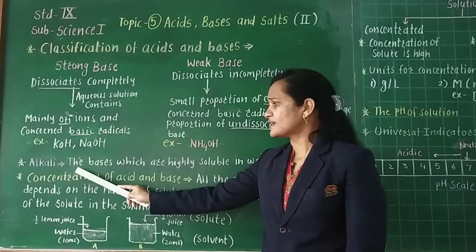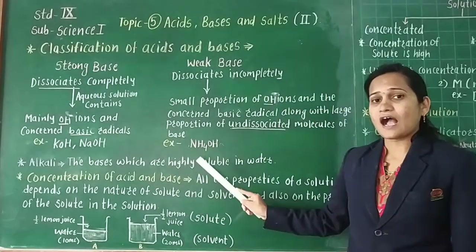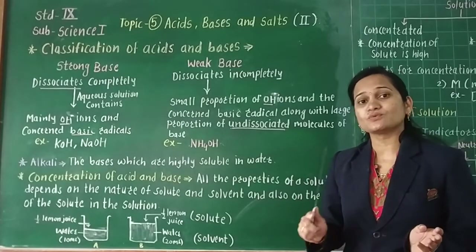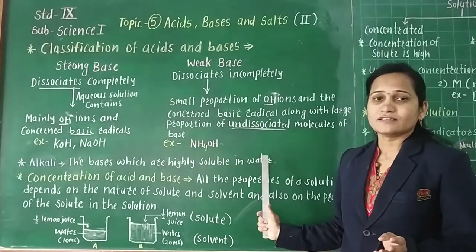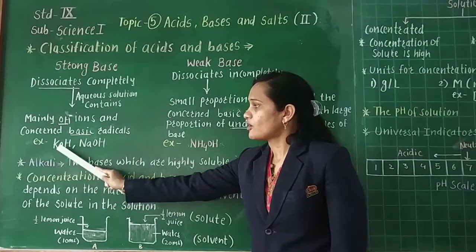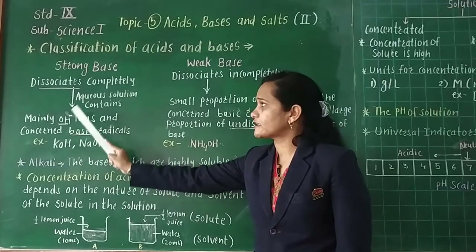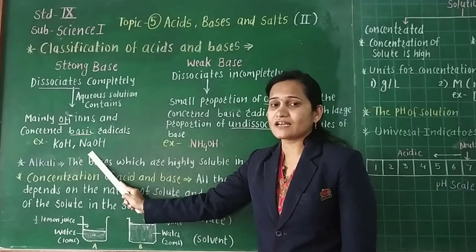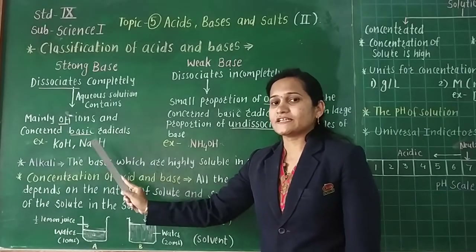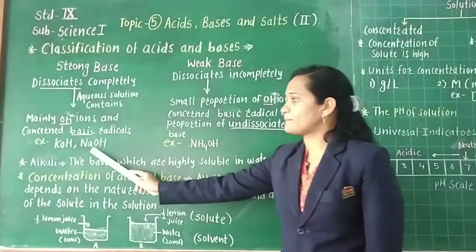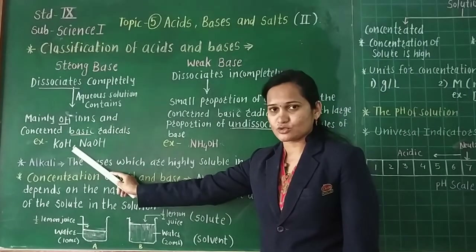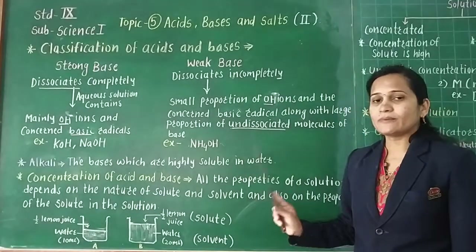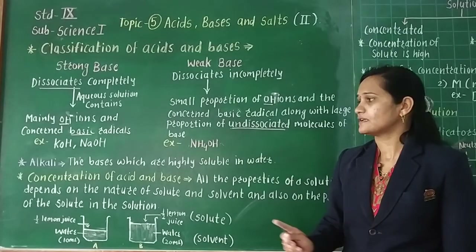Next point: Alkali. Alkali means the bases which are highly soluble in water. Alkali is a base, but specifically the bases which are highly soluble in water are known as alkali. Potassium hydroxide (KOH) and sodium hydroxide (NaOH) are strong alkalis. NH3 is a weak alkaline. These are examples of both strong bases and alkalis, because both are highly soluble in water.